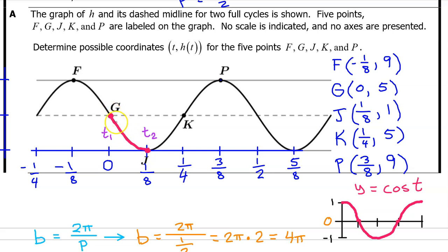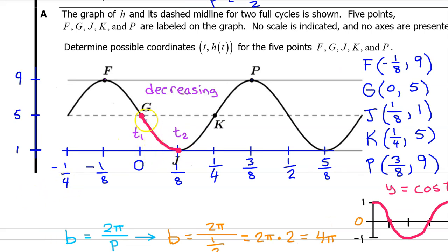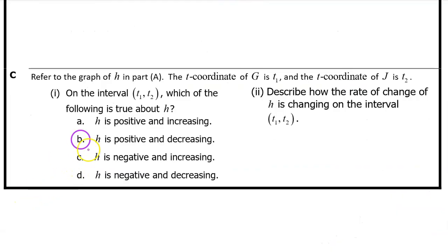On the interval from t1 to t2, h of t is definitely decreasing because it is falling from left to right. Next, we need to decide if h of t is positive or negative on this interval. Well, h of t has a minimum value of one. So it is always positive, including on the interval from t1 to t2. So remember, on this interval h of t is positive and decreasing. So the answer is B.